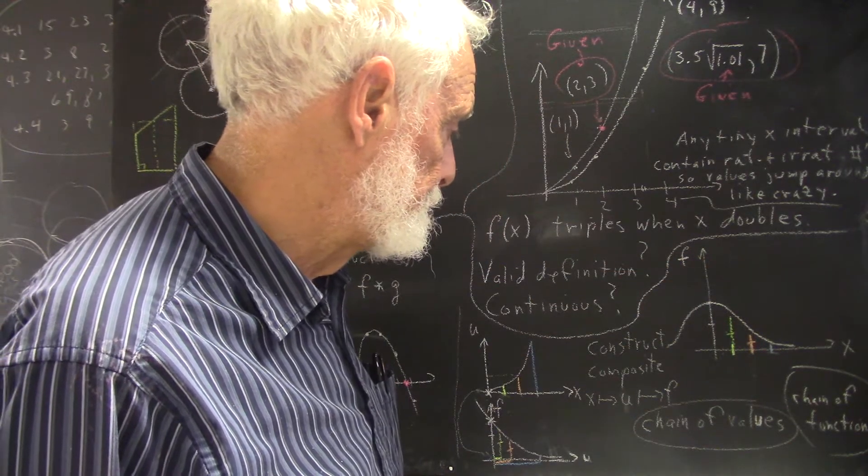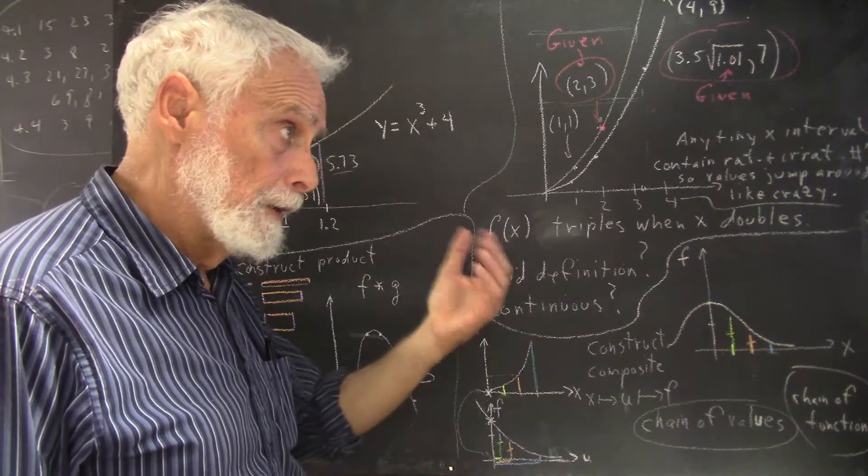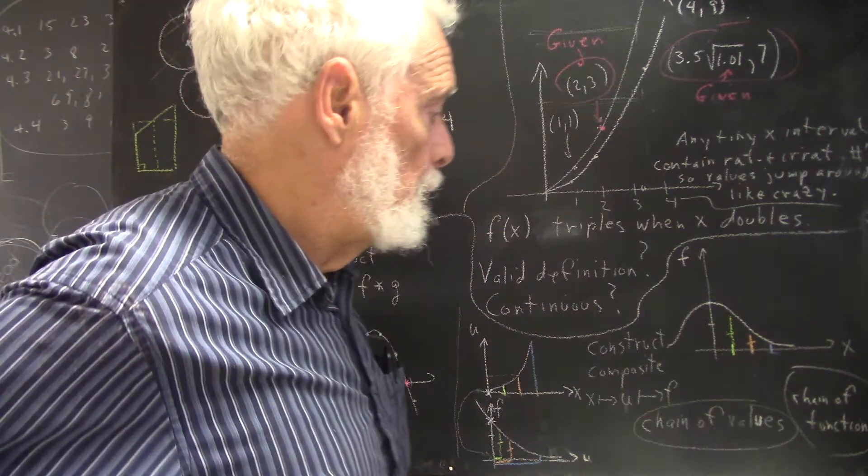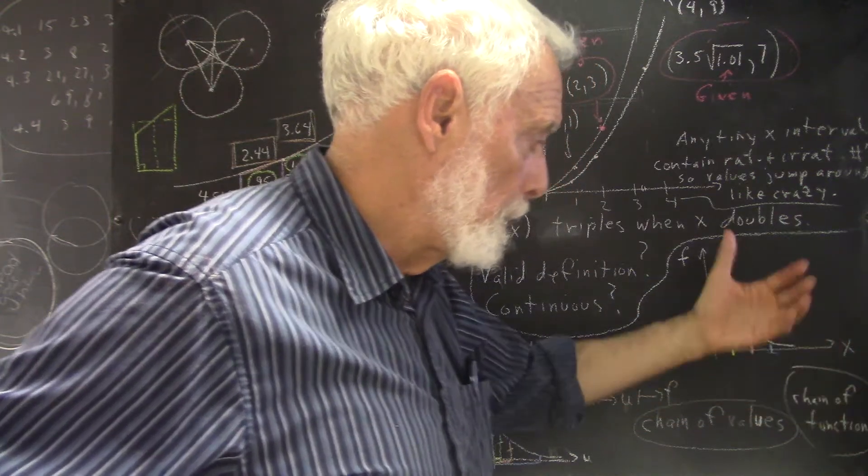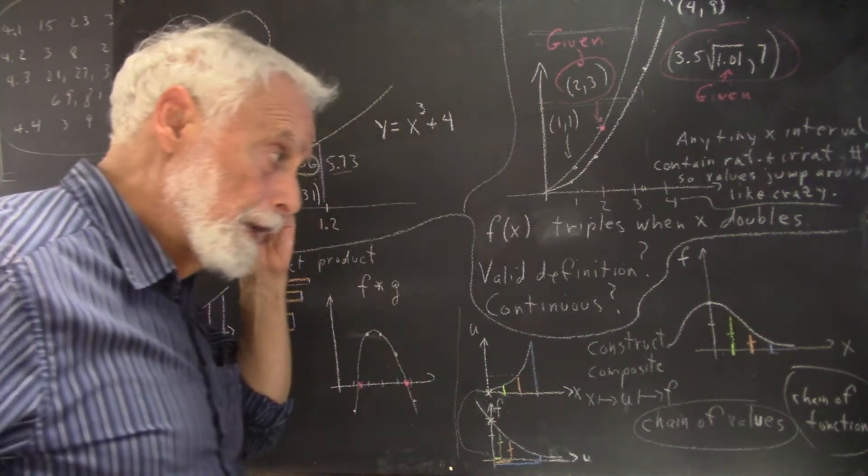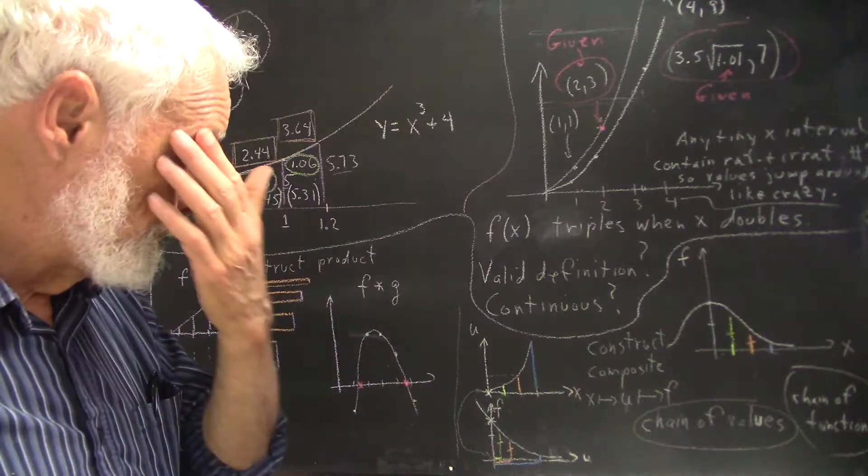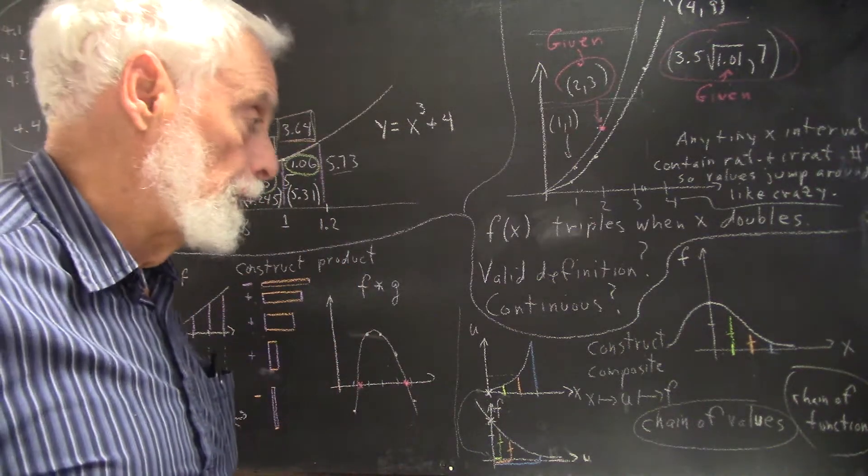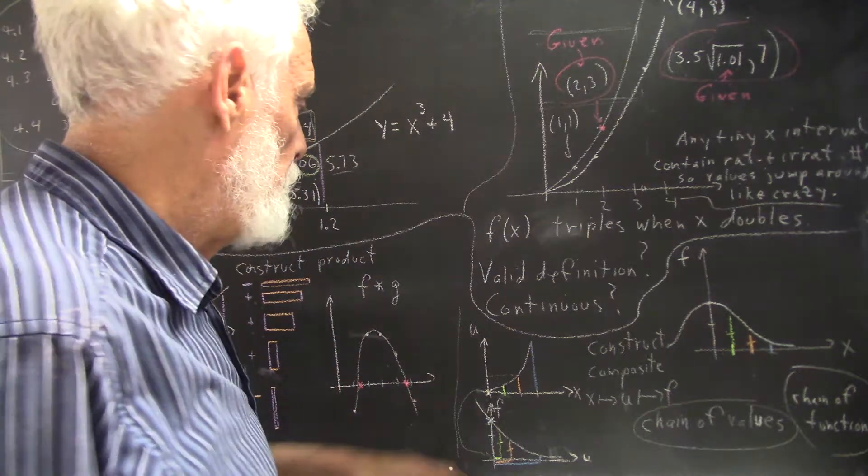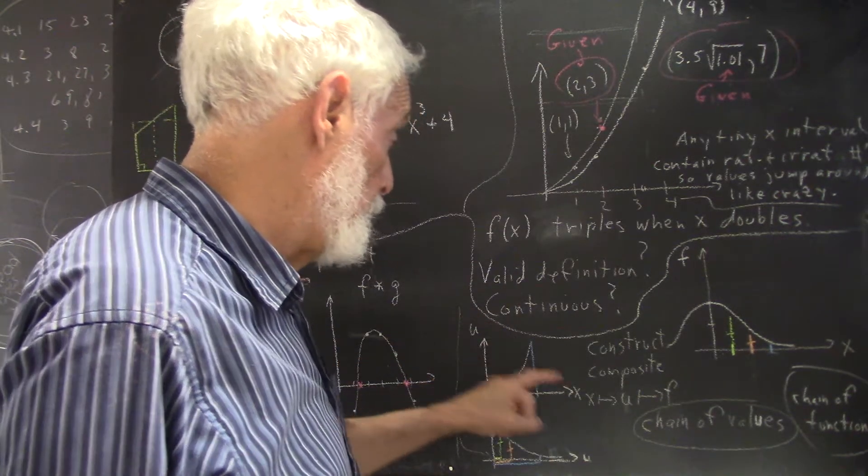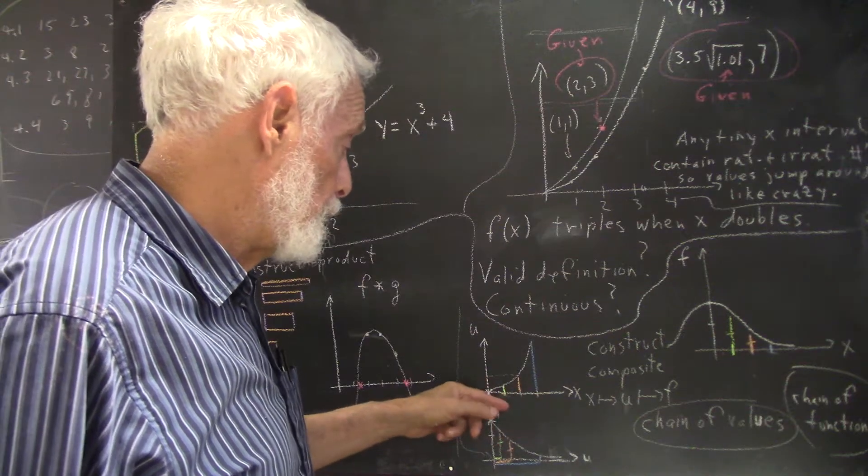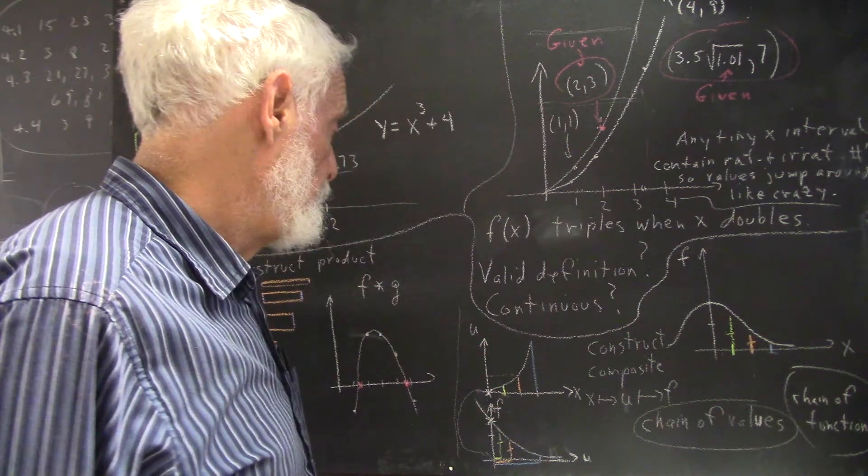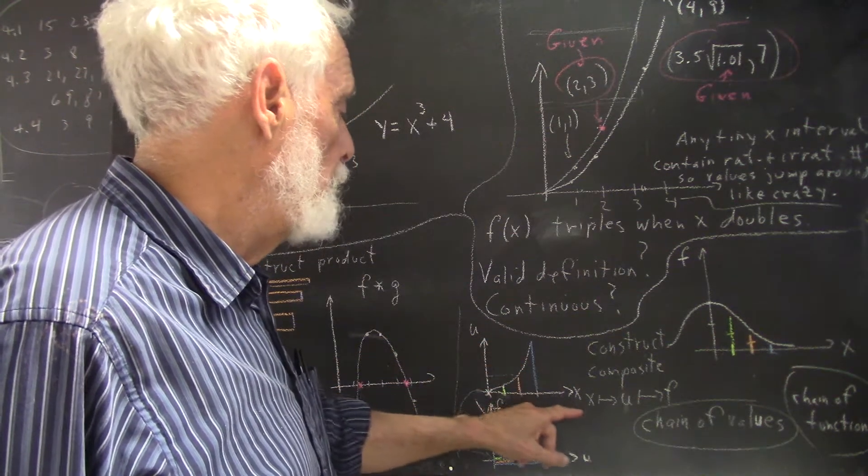And when we do this with graphs, as we're going to do here, we get really what we call a chain of functions, the functions represented by the graphs. So we're chaining functions here. We're going to chain two functions. We're going to chain a function U of X. U is a function of X here because if you've got a value of X, you can figure out the value of U. So we've got this function U of X.